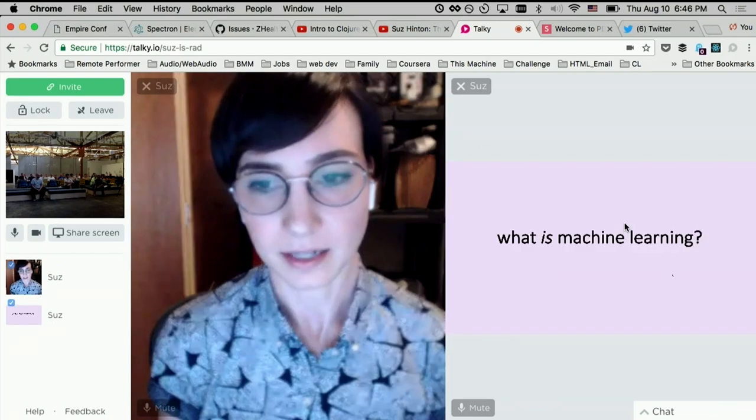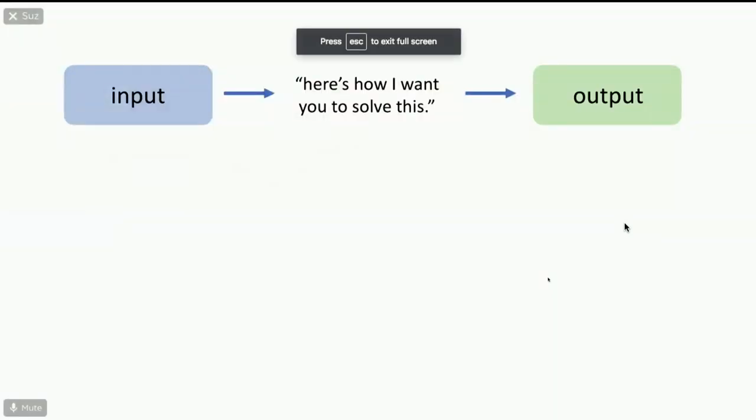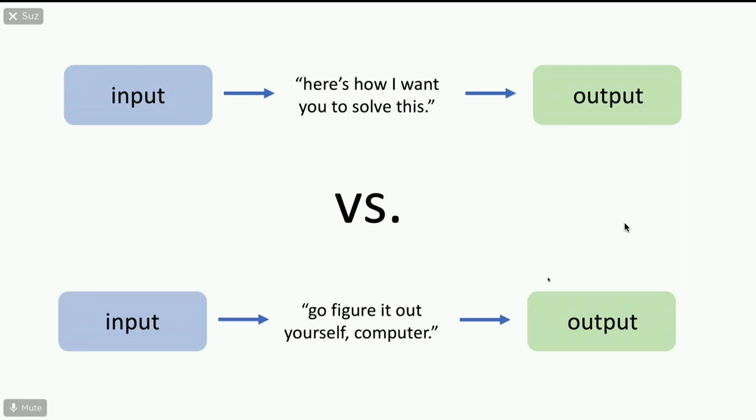So what actually is machine learning? With traditional programming, you have an input, you give that to the computer, and you say here's how I want you to solve this problem to give me the output I desire. With machine learning, you give the computer an input and tell it roughly what output you want, but the bit in the middle — you just say: go figure it out yourself. You can give it structure, but you're not explicitly telling it exactly how to do that with lines of code.